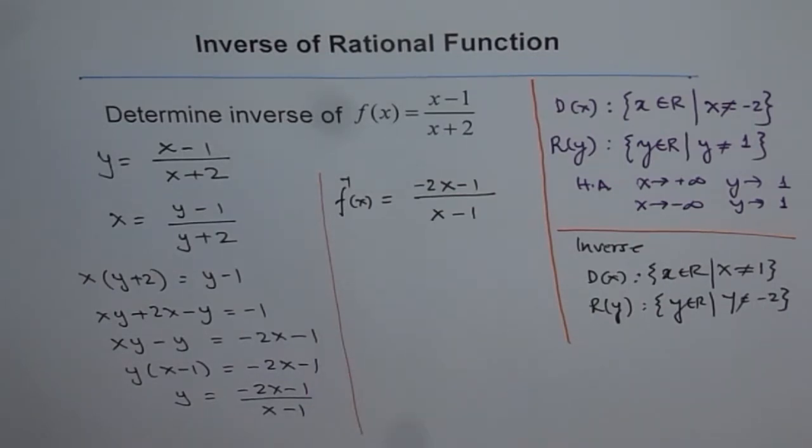So that is how you've got to do inverse of a rational function. Critical step here is this cross-multiply, combining the terms so that you can isolate y. So try to do a few examples like this. Get some practice, since it is at times very difficult to solve this kind of a problem in the test. I hope this solution helps you. Thank you.